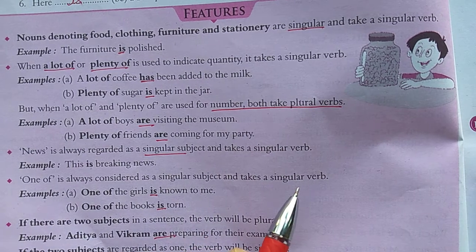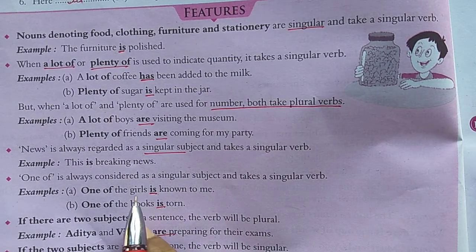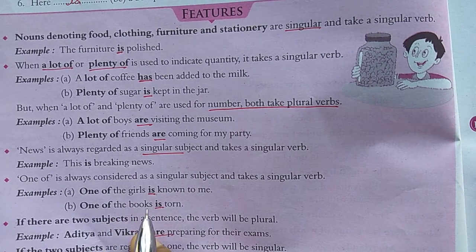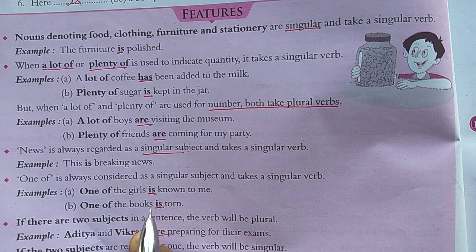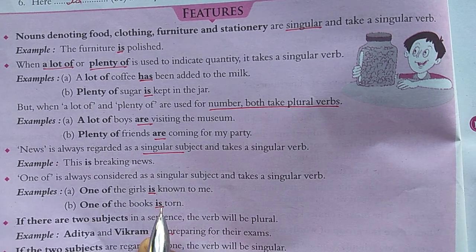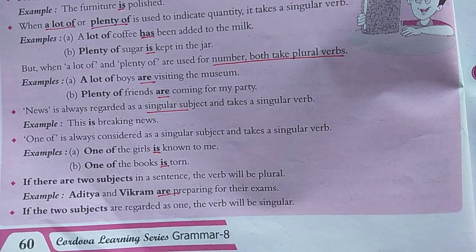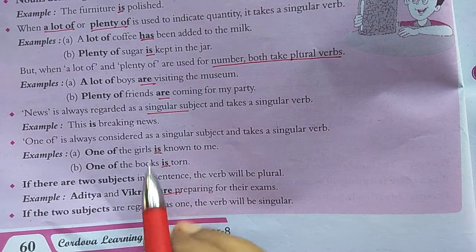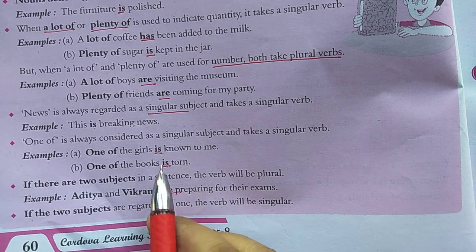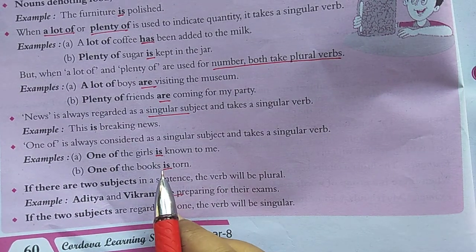'One of' is always considered a singular subject and takes a singular verb. For example, 'One of the girls' — there may be many girls, but we are talking about one, so it is singular. Similarly, 'One of the books' — among many books we are referring to one, so we use a singular verb. Do not go with the word 'girls' or 'books' — focus on 'one,' which is singular.